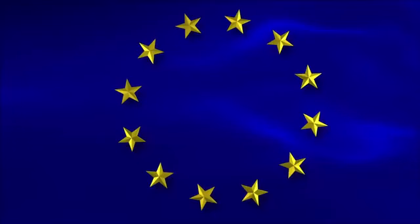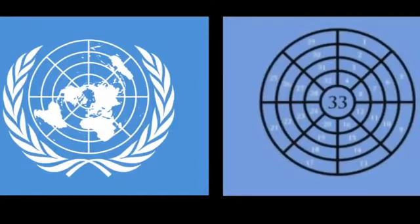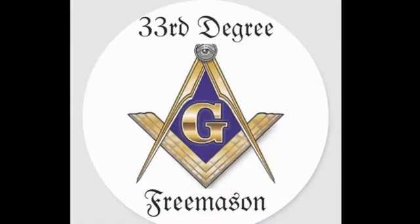Is the North Pole the true Holy Grail? The clock with its twelve hours — all time revolving around the center, or the pole. There are twelve months in a year and four seasons, just like the four continents surrounding the pole. Our Earth is the oldest clock. Twelve stars on the flag of Europe. Mercator's letter stated that Mount Meru or Rupes Nigra was 33 miles in circumference — 33 again.